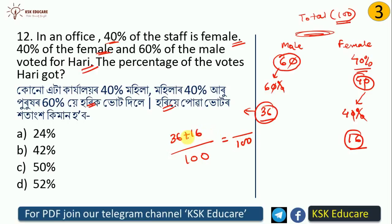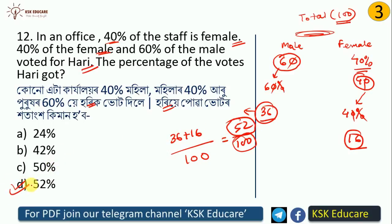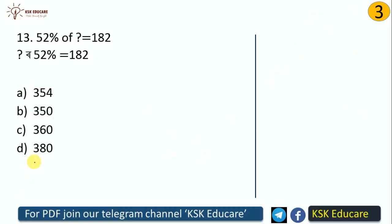The total number who voted is 16 plus 36 equals 52. Out of 100 total staff, 52 voted, so the percentage is 52%. Therefore, 52% is the answer and the correct option.